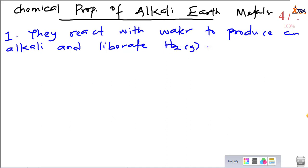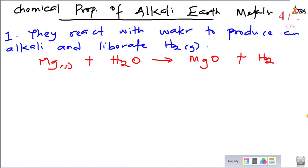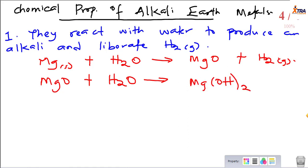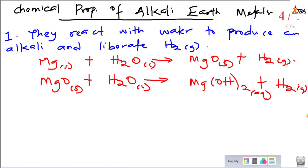Let's pick any member of the alkaline earth metals — magnesium. Magnesium reacts with water to produce first a base and liberate hydrogen gas. The reaction can proceed in the presence of excess water: magnesium oxide reacts with more water to give us an alkali, which is Mg(OH)₂, and liberates hydrogen gas. So you can see that magnesium has reacted with water to give us a base at first and an alkali eventually.